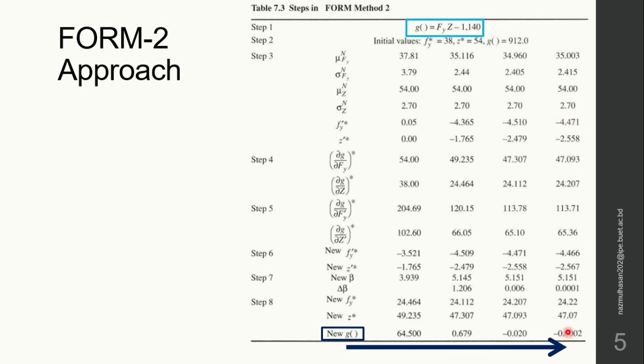And this point is known as the most probable point, or in some cases critical point. We can also have the information on the reliability index, which here is 5.151, which is way above 3 and which suggests that the system is very reliable.